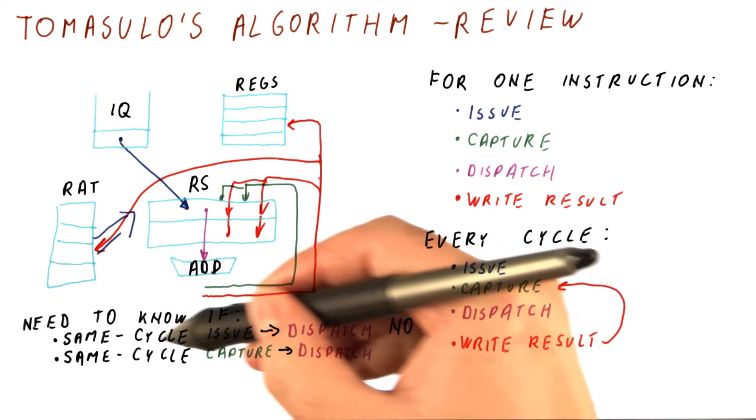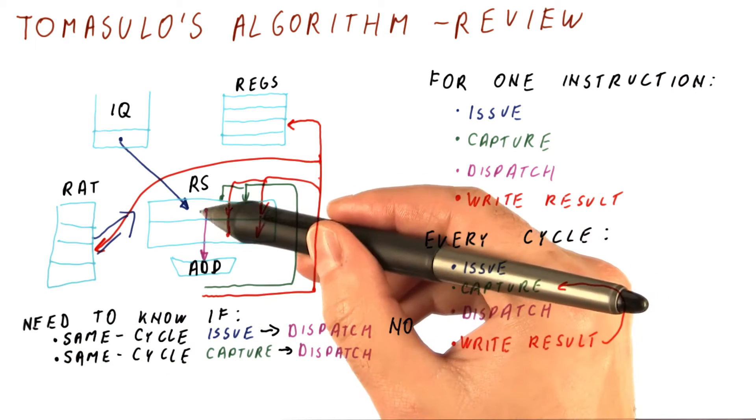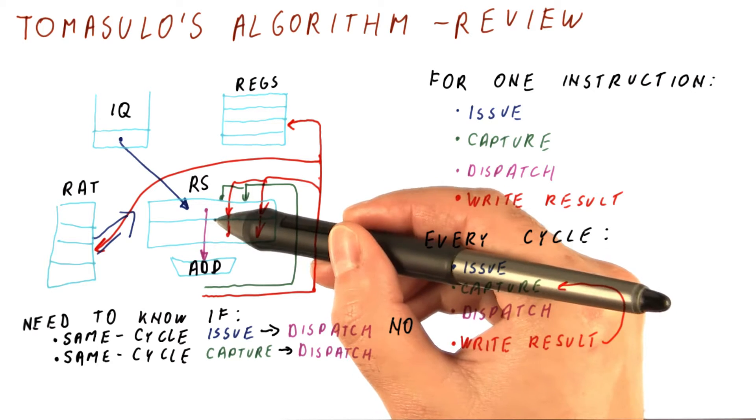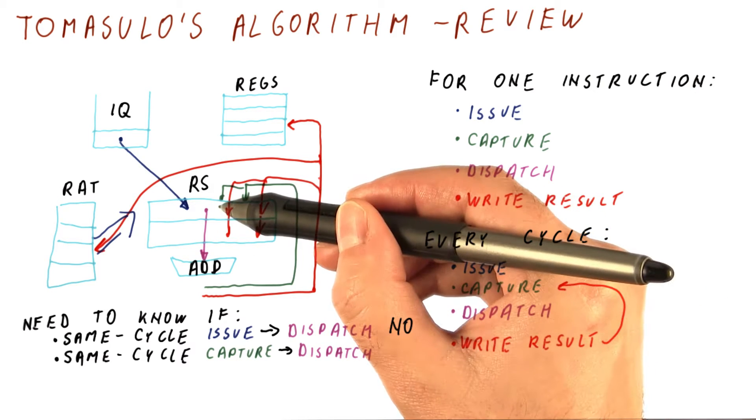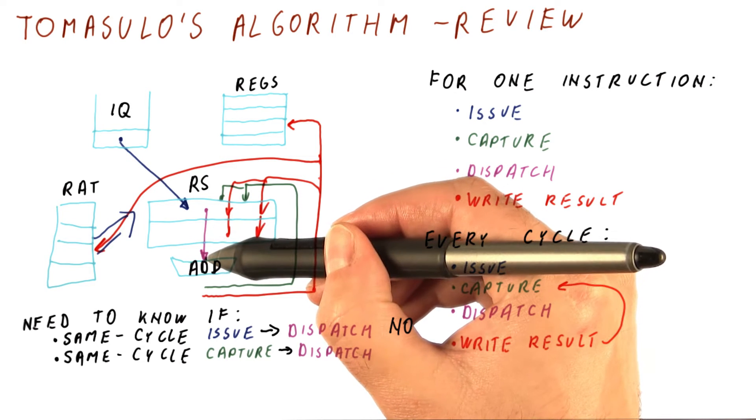The next thing is whether it's possible to do same cycle capture and then dispatch. So if an instruction is sitting in a reservation station after being issued, and it captures its last missing operand in this cycle, can it also dispatch in this cycle?